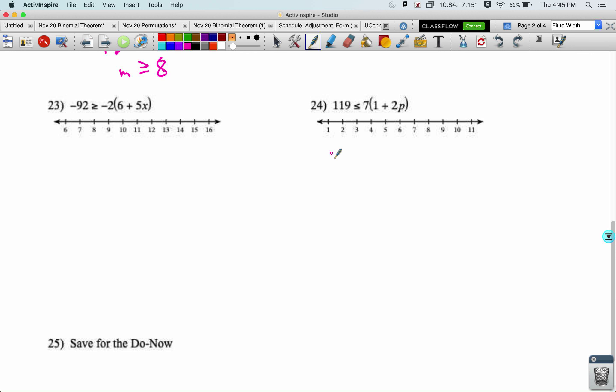All right, let's see if there's any others we have to do. Let's just do 24 real quick. It's not that different, but I think it'll still be just good practice. Distribute the 7. 119 is less than or equal to 7 plus 14p. Constants on both sides. 112 is less than or equal to 14p. Divide both sides by 14.